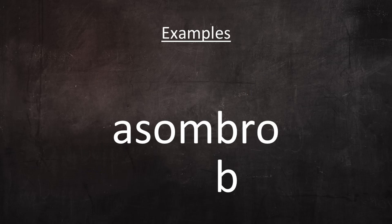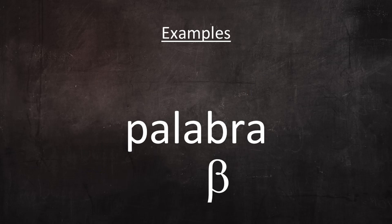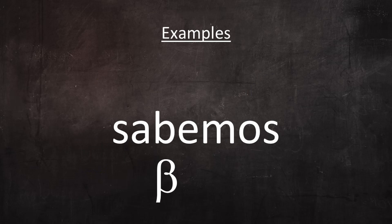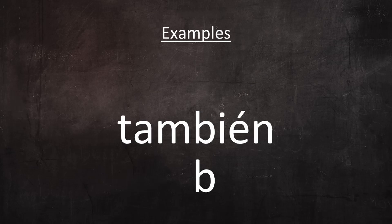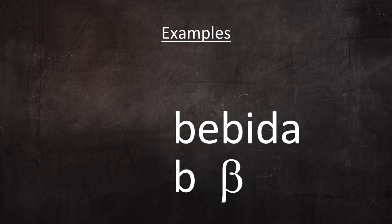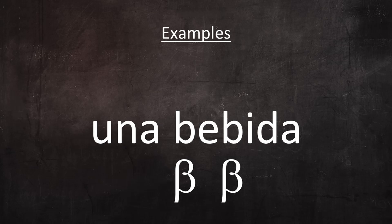'Abuela.' 'Asombro.' This B is a stop because it comes after M. This B is a stop because it comes after M. 'Bebida.' The first B is a stop because it comes at the beginning of an utterance. 'Una bebida.' And here, the same B in the same word is pronounced as an approximant because it comes after a vowel.